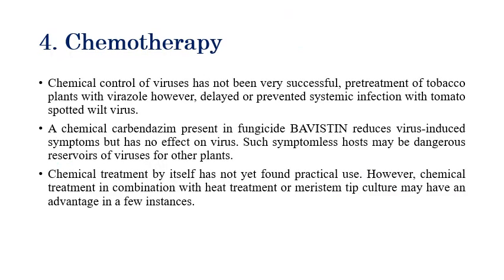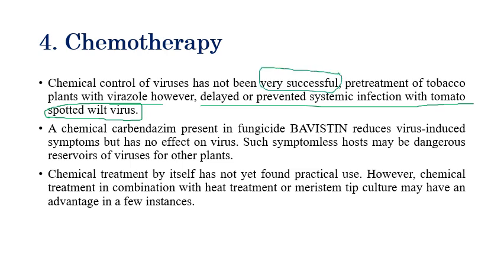Chemotherapy, or use of chemical controls, is not very successful in the management of plant viral diseases. For example, pre-treatment of tobacco plants with virazole only delayed or prevented systemic infection with tomato spotted wilt virus but did not eliminate it. Carbendazim, present in the fungicide Bavistin, reduces virus-induced symptoms but has no direct effect on the virus itself.